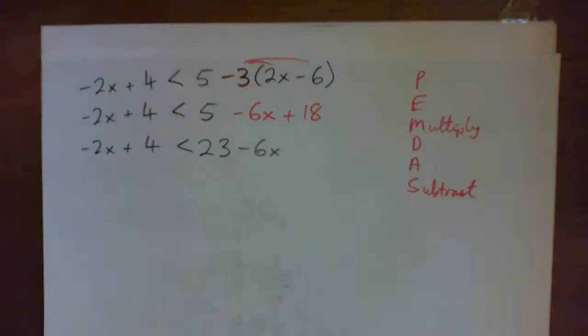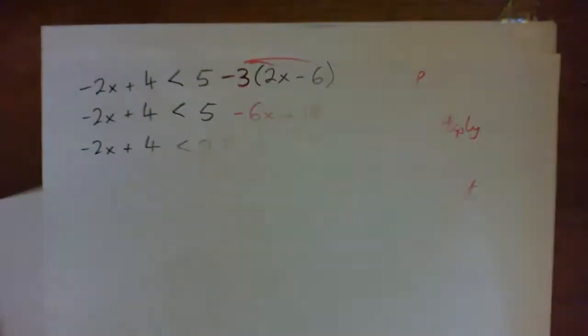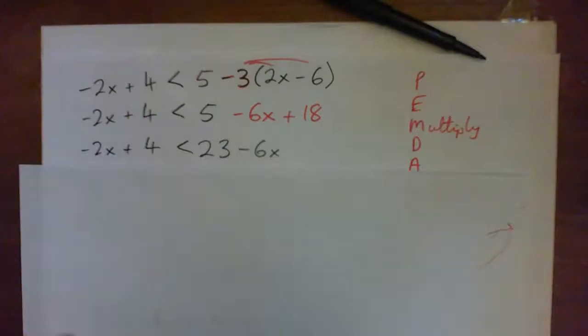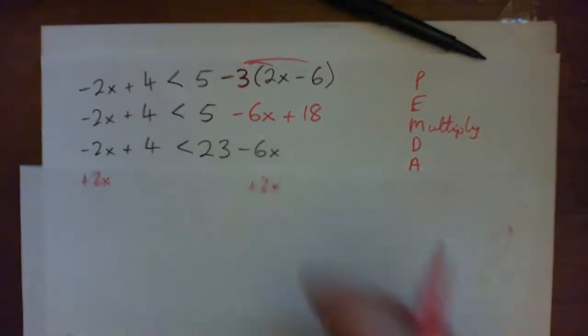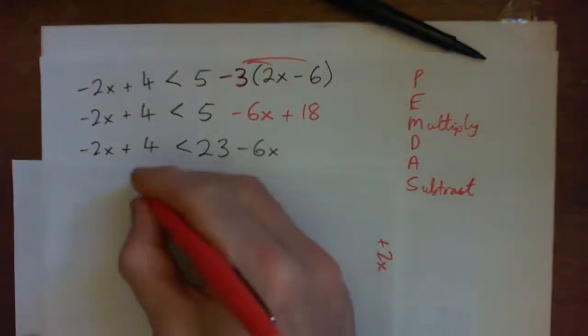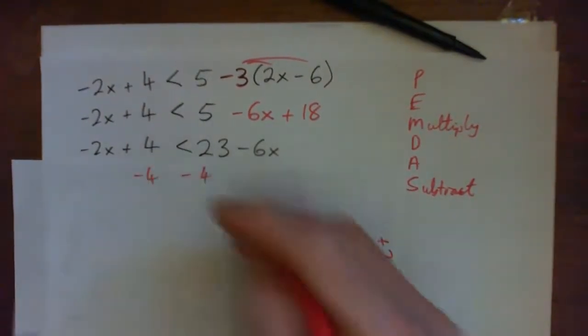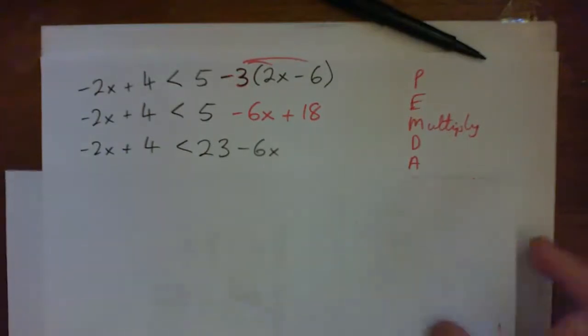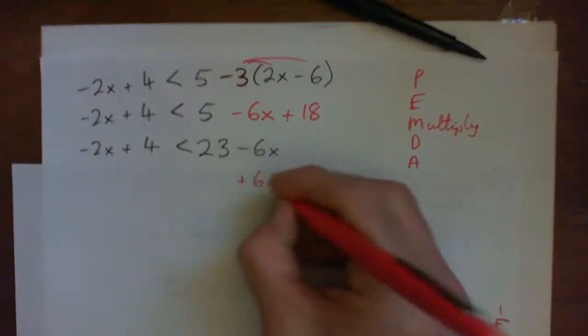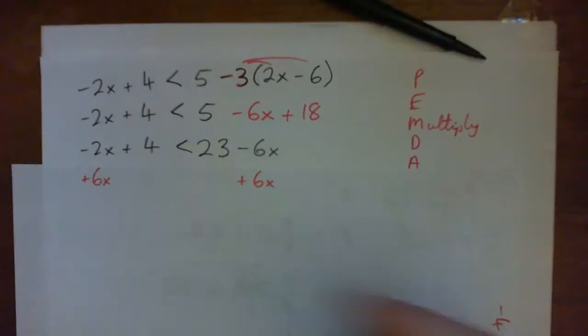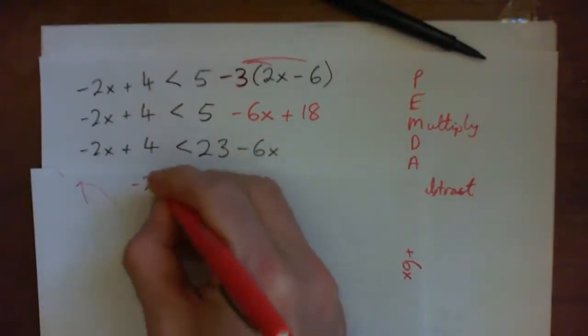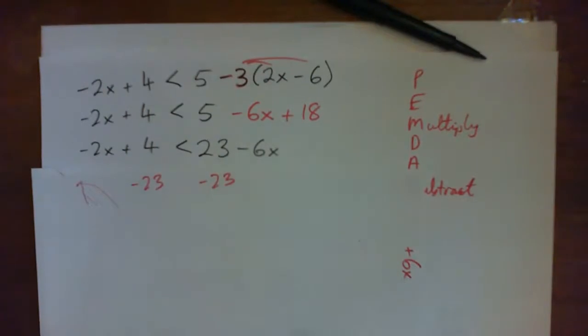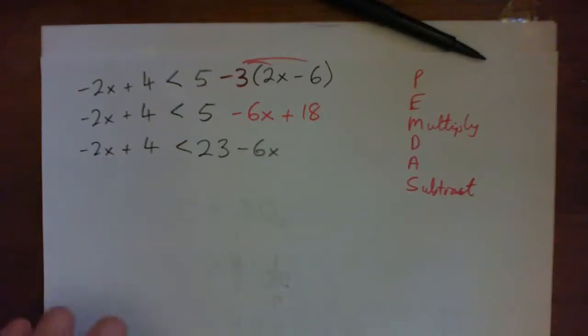Now at this point, there's lots of things we can do. We could add 2x to both sides. We could subtract 4 from both sides. We could add 6x to both sides. And we could subtract 23 from both sides. So lots of things we could do. Try to get rid of the x or the y or the variable from the right side. Okay.